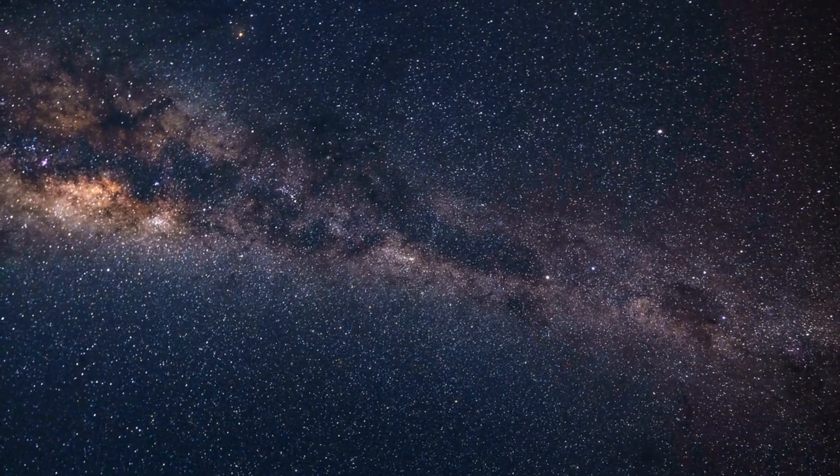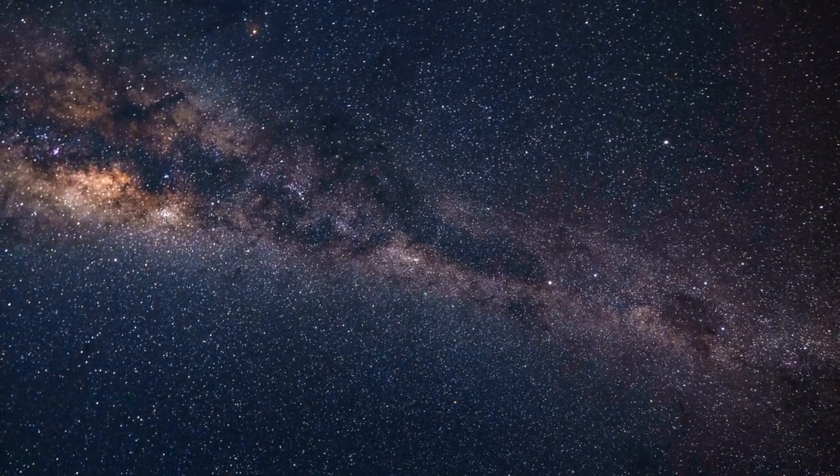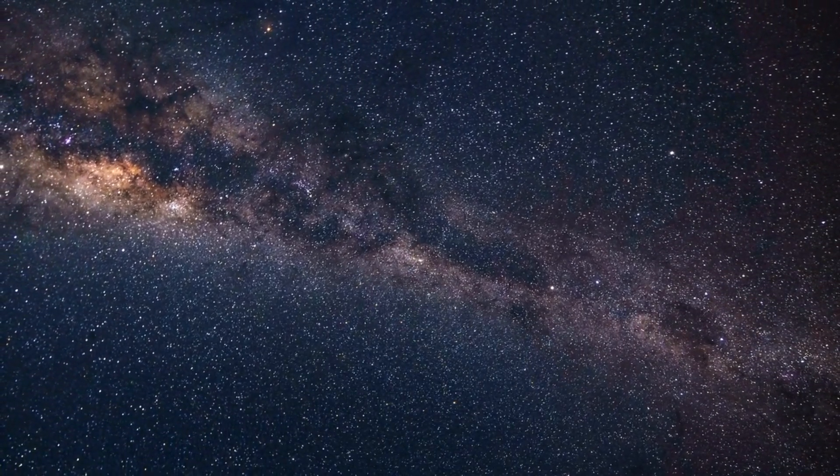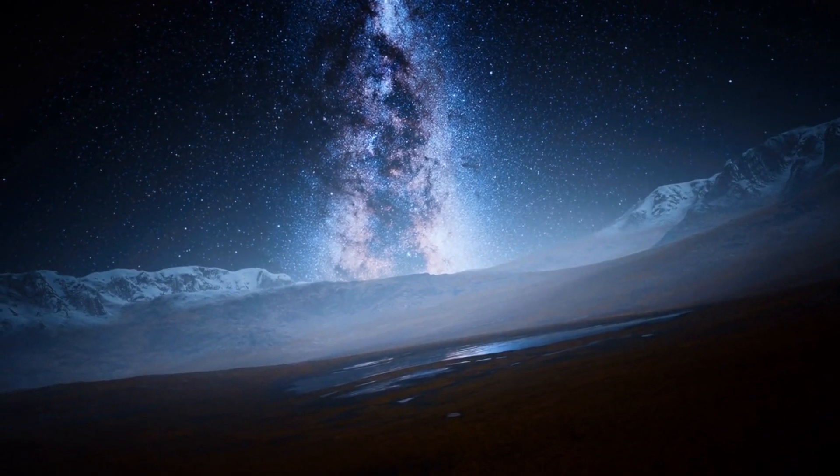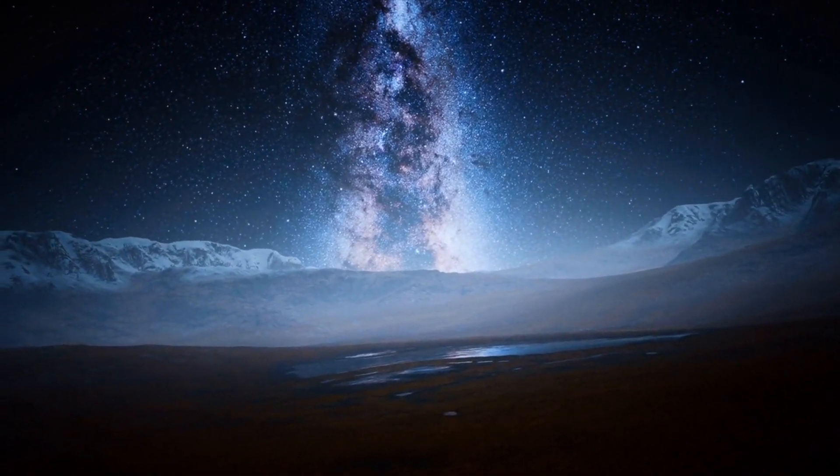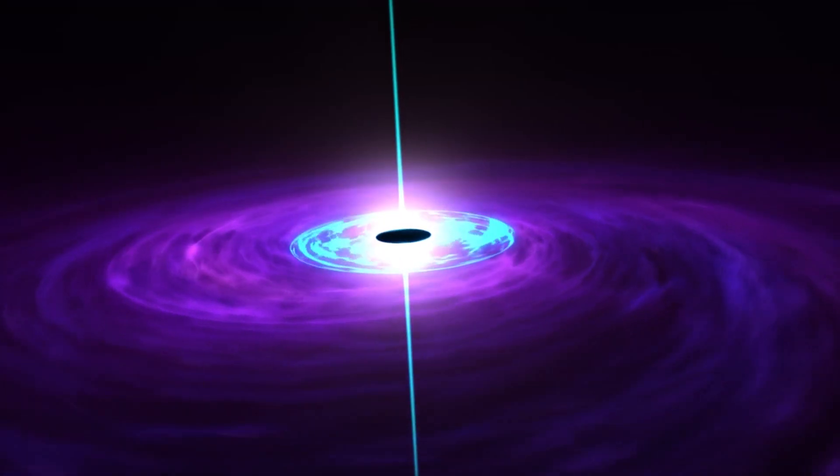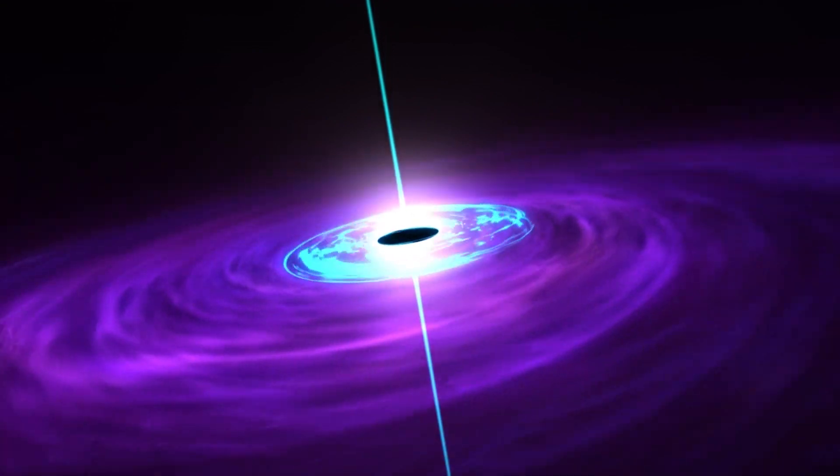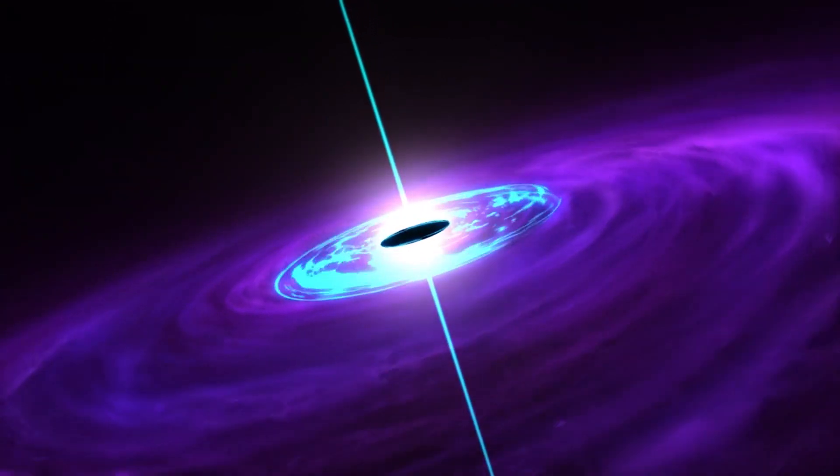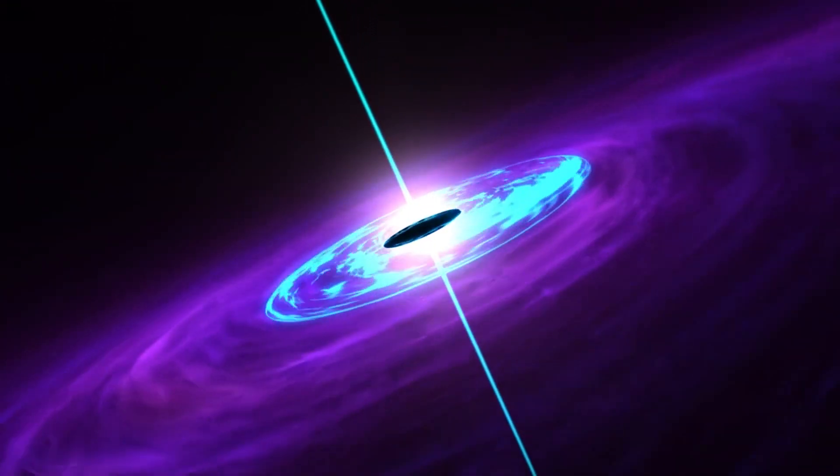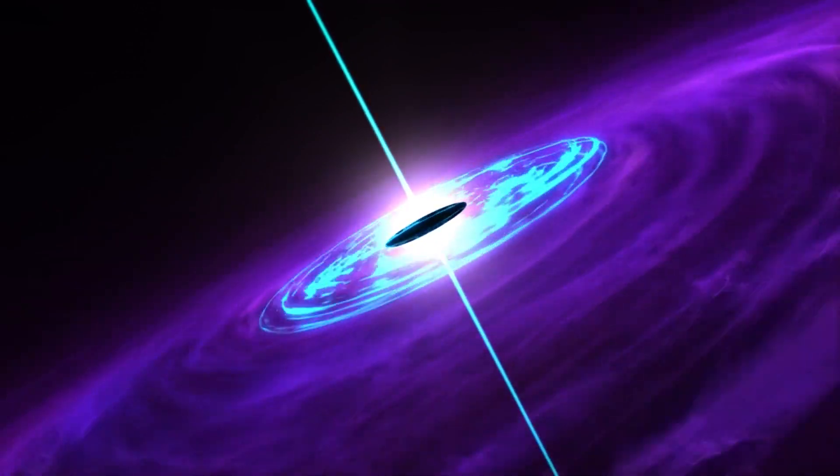While Sagittarius A was not the first black hole to be directly imaged, that honor goes to M87, efforts have been made by the EHT to capture its image as well. Its proximity and significance make it a prime candidate for future direct imaging, promising more detailed observations. The presence of Sagittarius A offers clues about the evolution of the Milky Way. Supermassive black holes are believed to play a crucial role in the formation and growth of galaxies, making our understanding of Sagittarius A pivotal in piecing together the cosmic jigsaw of our galaxy's history.